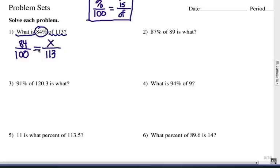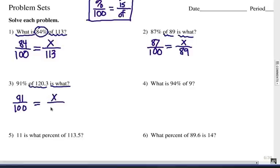So I'm going to cross multiply and solve, and I'll show that in just a minute. Number two, 87%, so it's going to be 87 over 100, equals the of number is 89. Where does that go, top or bottom? Right, of is on the bottom. It's is over of, is is unknown, that's my x. So that proportion looks like that. And we'll cross multiply to solve. 91%, 91 over 100, equals is over of. Is is unknown. Of is 120.3. Cross multiply to solve.